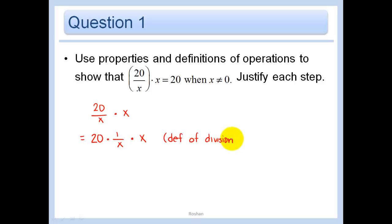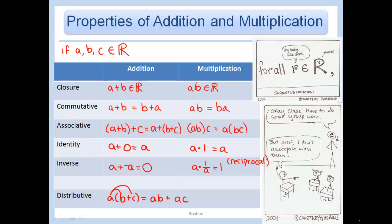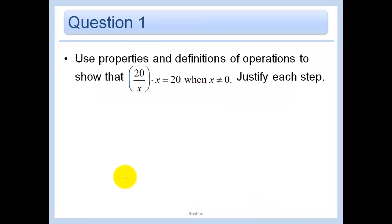Now, we can simplify that further by knowing that 1 over X times X is equal to 1 by what property? I think that was the inverse property of multiplication. Yes. And now we can go further because 20 times 1 is equal to 20. And we know that because we know that 1 is the identity element for multiplication. Also, look back here and think about some of these properties and I want you to start thinking about what they hold for subtraction and division also. We're going to be talking about that in class.